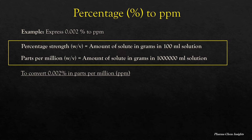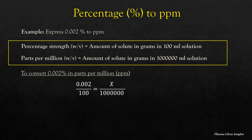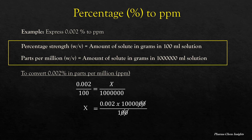To convert 0.002 percentage to parts per million: 0.002 percentage is nothing but 0.002 gram in 100 ml. So 0.002 divided by 100 equals X divided by 1 million. Therefore X equals 0.002 into 1 million divided by 100. By calculating, we get 0.002 into 10,000, which equals 20 PPM.